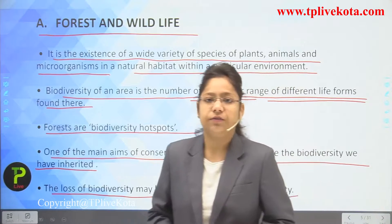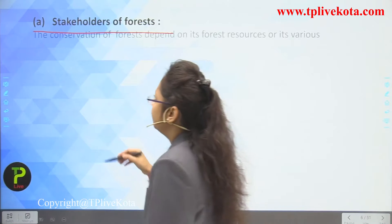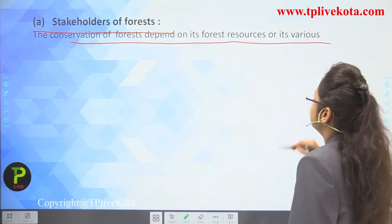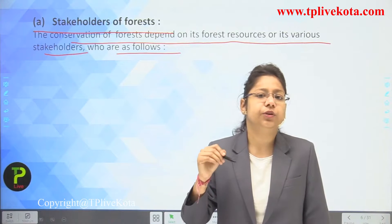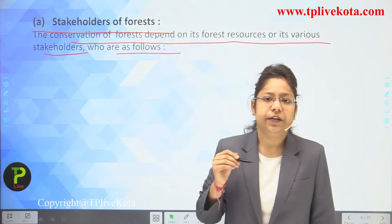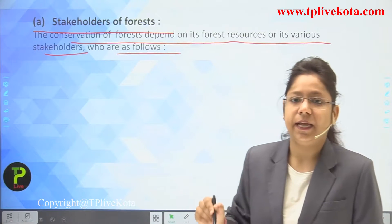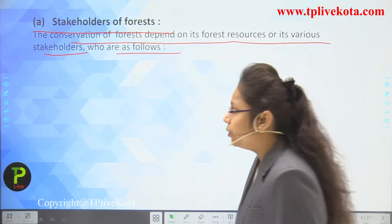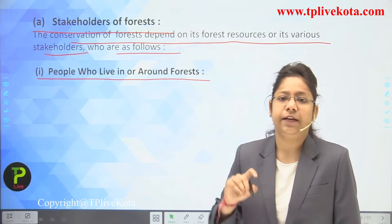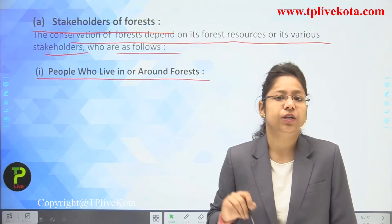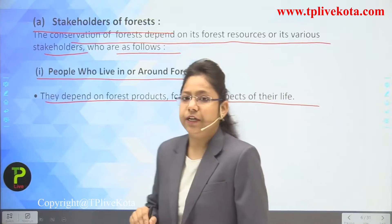Conservation of forest depends on its various stakeholders. First, somebody must be assigned the duty to preserve the forest — officers count species and manage activities. The first group of stakeholders is people who live in or around the forest, such as tribal communities. They depend on forest products for various aspects of their life — cutting wood, taking fruits and vegetables — and are totally dependent on the forest for survival.